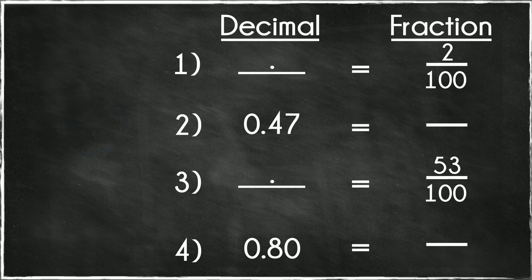Let's go through the answers. Number 1. 2 hundredths, expressed as a decimal, is 0.02.